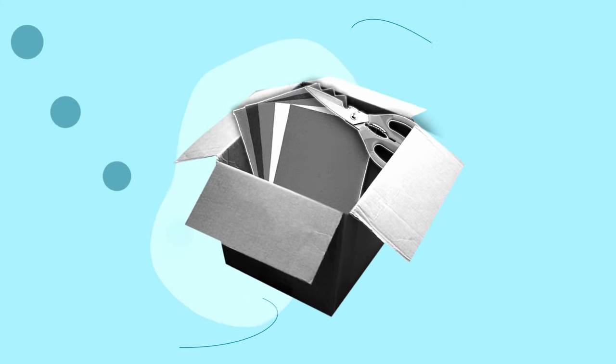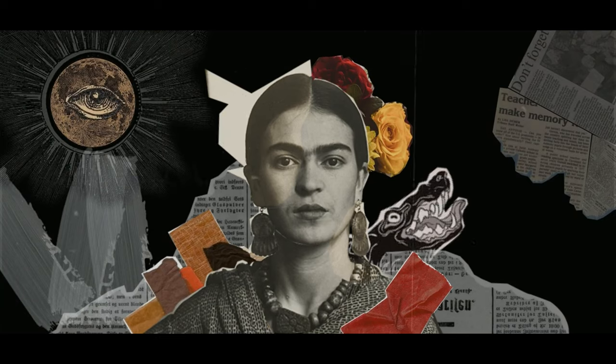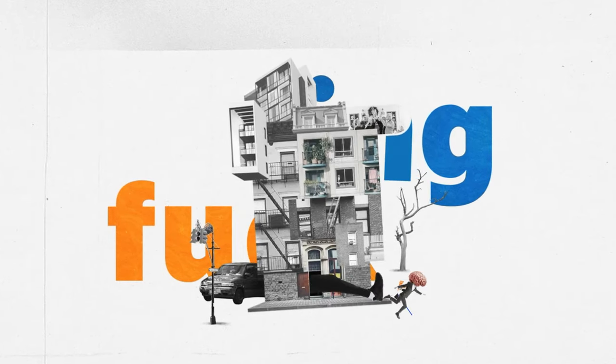Collage animation is a type of animation which consists of a mixture of real photographs and illustration. Imagine you have a big box of colorful papers, scissors, and glue — with these simple things you can make pictures come to life, just like your favorite cartoons. The secret ingredient is that we cut out different parts of colorful paper to make characters, objects, or backgrounds, just like a puzzle.